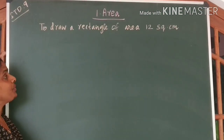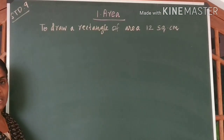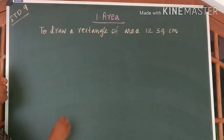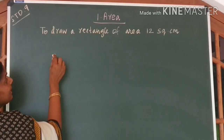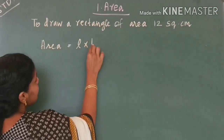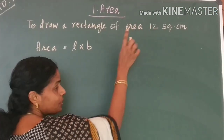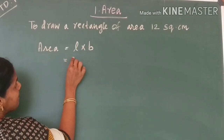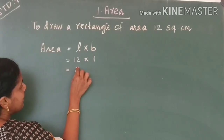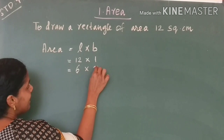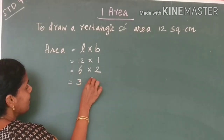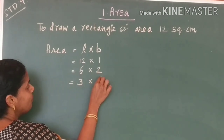First question: to draw a rectangle of area 12 square centimetre. You all know the formula to find area of a rectangle as length into breadth. So, to get 12 square centimetre, we can take the measures to be 12 into 1, or otherwise we can take 6 into 2, or again 3 into 4.